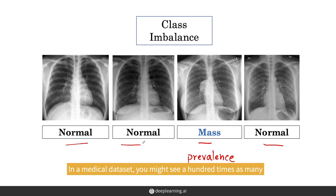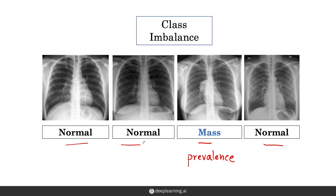In a medical dataset, you might see 100 times as many normal examples as mass examples.